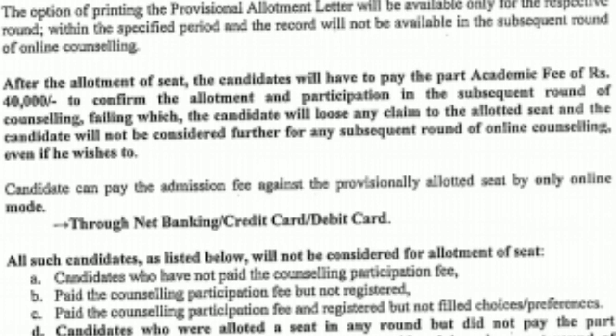Some important points to note: you have to fill your choices, check your result, and print out your provisional allotment letter. The option to print the allotment letter will be available only for the respective round. After the allotment of a seat, candidates must pay the part academic fee of ₹40,000 to confirm the allotment and participation in the subsequent round. If you haven't paid ₹40,000 in any of the rounds, you are not eligible for the next round.